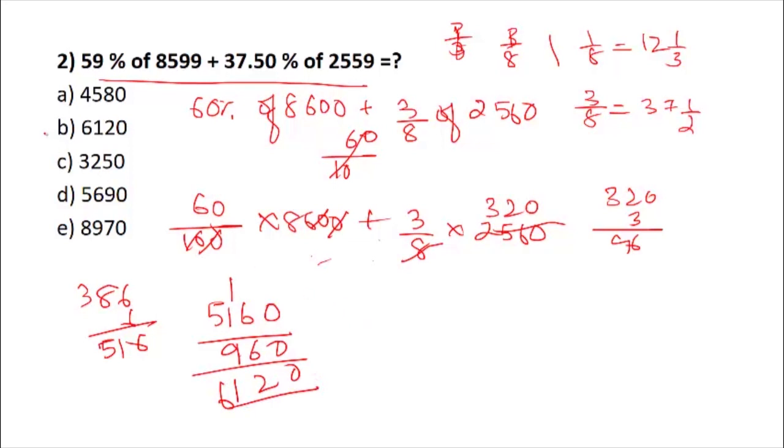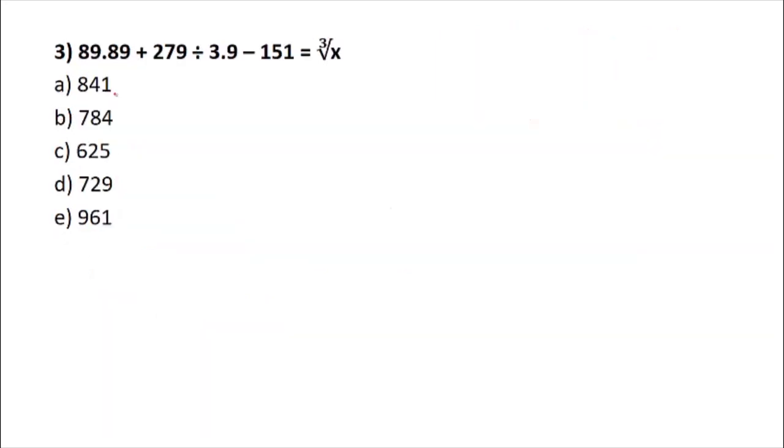We are taking the next problem, question number 3. Here, 89.89 could be written as 90, and 279 could be written as 280 because 3.9 could be converted to 4, and this 4 will divide 280. You can write it as 280 plus 280 divided by 4 minus 150. This equals x.